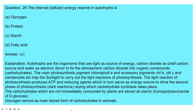Question: The internal energy reserve in autotrophs is — glycogen, protein, starch, or fatty acids? The answer is starch. Autotrophs use light as energy, CO2 as carbon source, and water as electron donor to fix carbon dioxide into organic compounds. Carbohydrates not immediately consumed by plants are stored as starch. Glycogen serves as the main stored form of carbohydrates in animals.